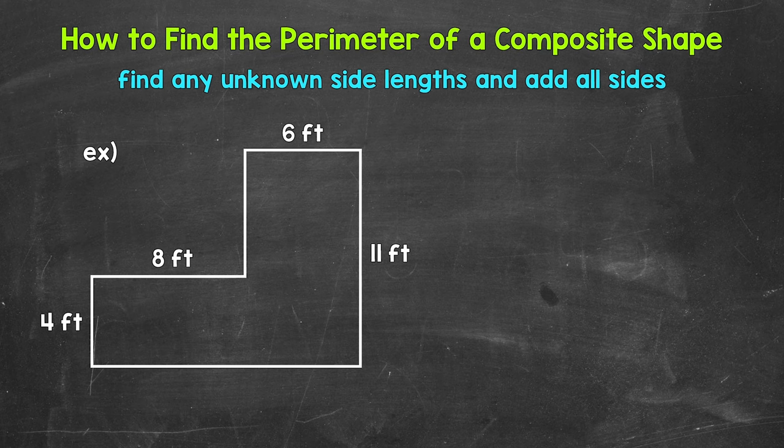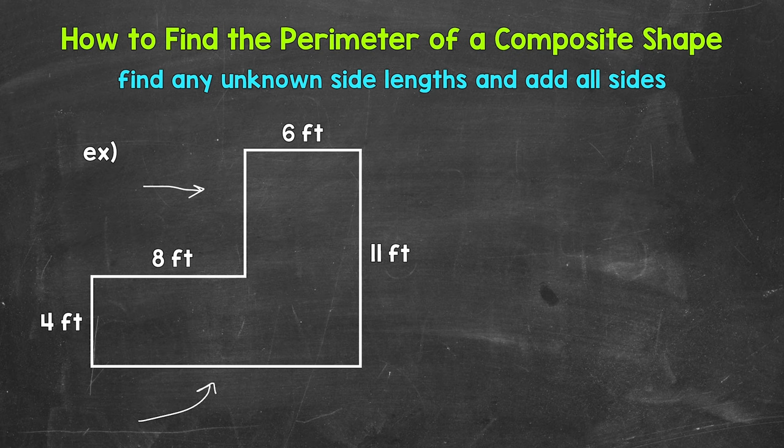The first thing that we need to do is find any missing side lengths if there are any, because we will need all of the side lengths in order to find the perimeter. For our example, we have two that are missing — this side and this side.